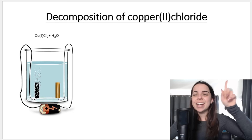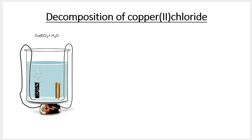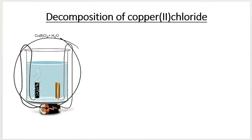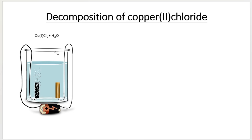Let's take a look at how this works. We can prepare a solution of blue copper chloride, or we can use molten copper chloride, and set up the following electrolytic cell. It's an electrolytic cell. We've got one beaker, and both my electrodes — my metal plates — are in the same beaker.